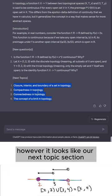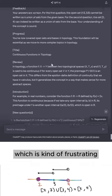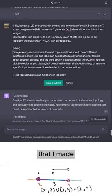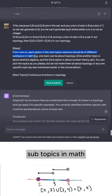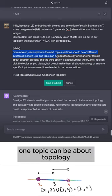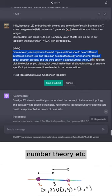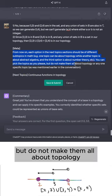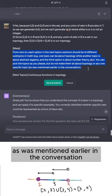However, it looks like our next topic section is still all about topology, which is kind of frustrating. So maybe I didn't word this correctly. So now I'm going to adjust the meta comment that I made. From now on, each option in the next topic section should be different subtopics in math. For example, one topic can be about topology while another topic is about abstract algebra. And the third option is about number theory, etc. You can pick the topics as you please, but do not make them all about topology or any one specific topic.